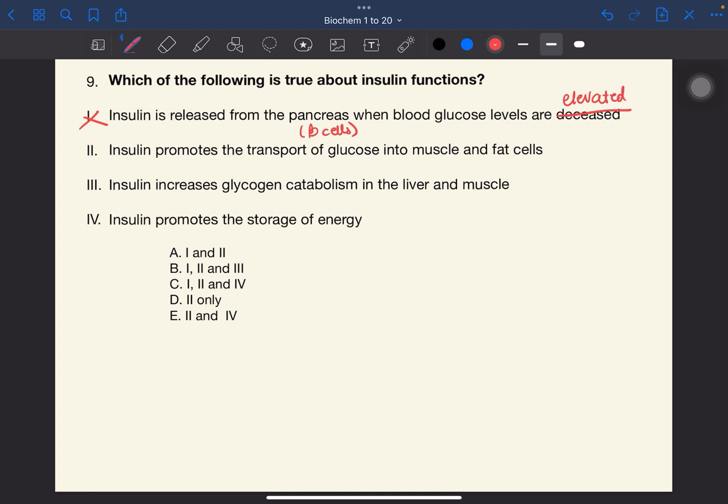Statement two, insulin promotes the transport of glucose into muscles and fat cells. This is correct. Insulin puts glucose into the cells. That's how I remember it. Statement three, insulin increases glycogen catabolism in the liver and muscles. So this is wrong. Since insulin increases glycogen synthesis in the liver and muscle, meaning it increases anabolism.